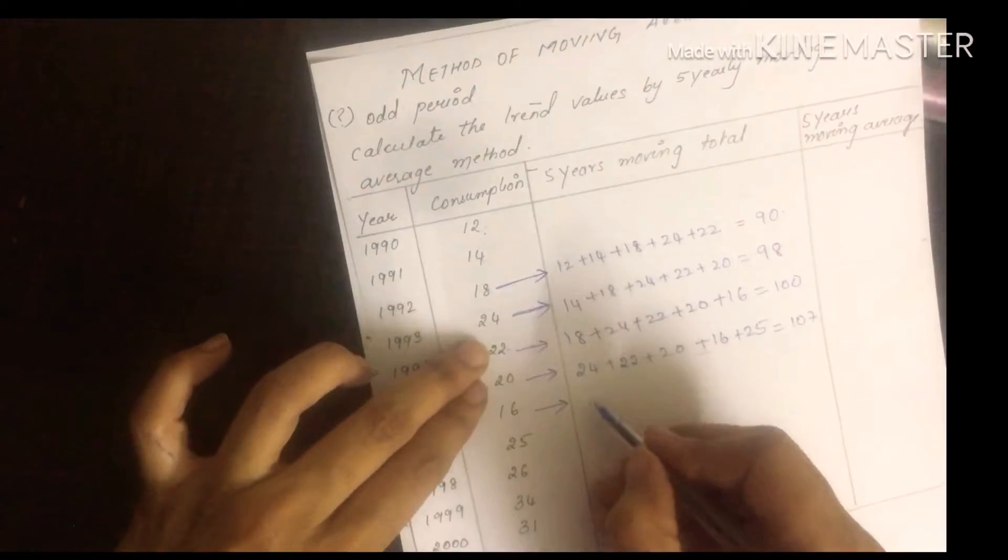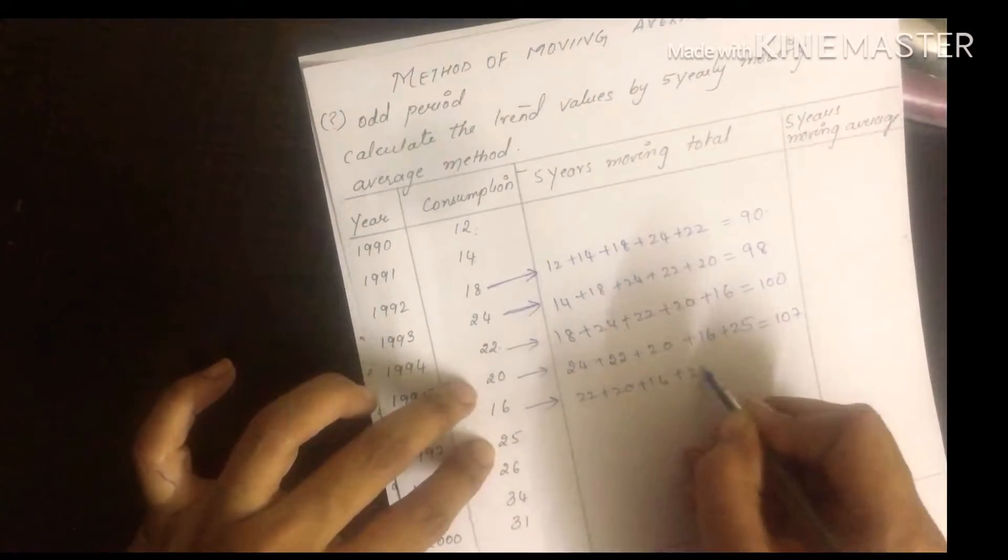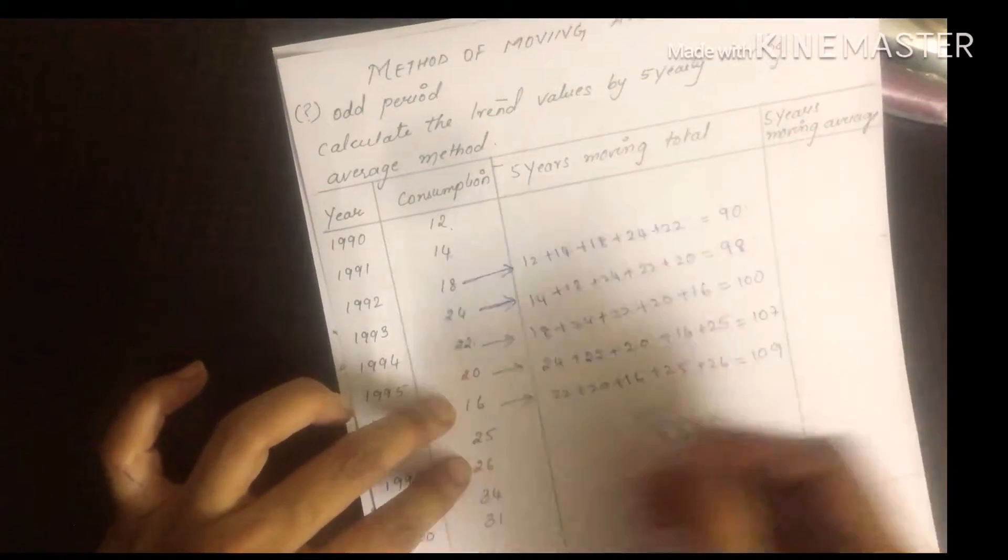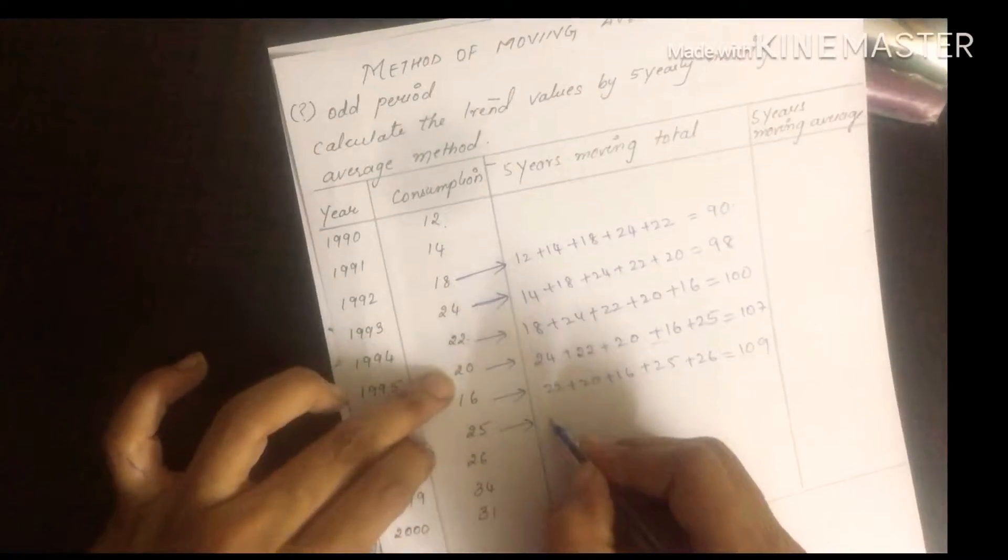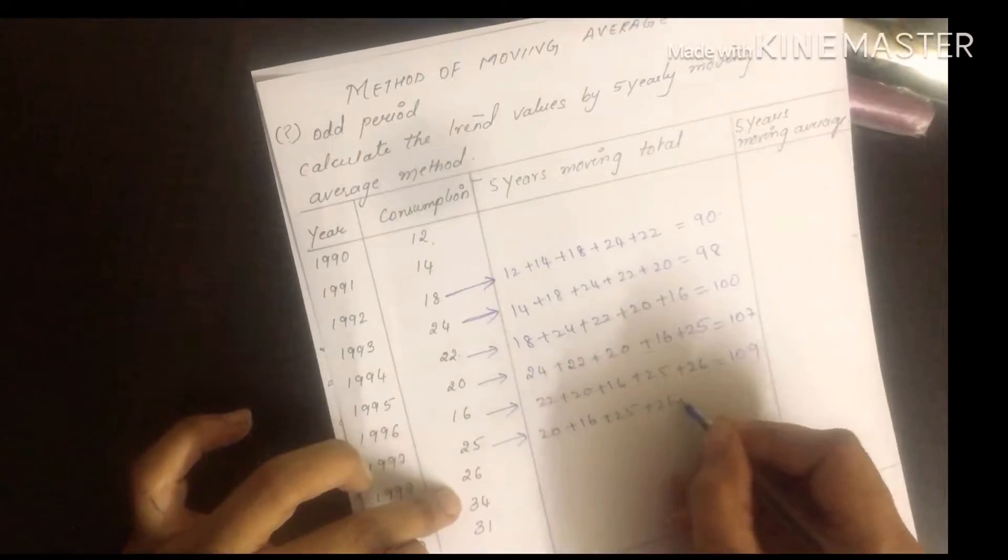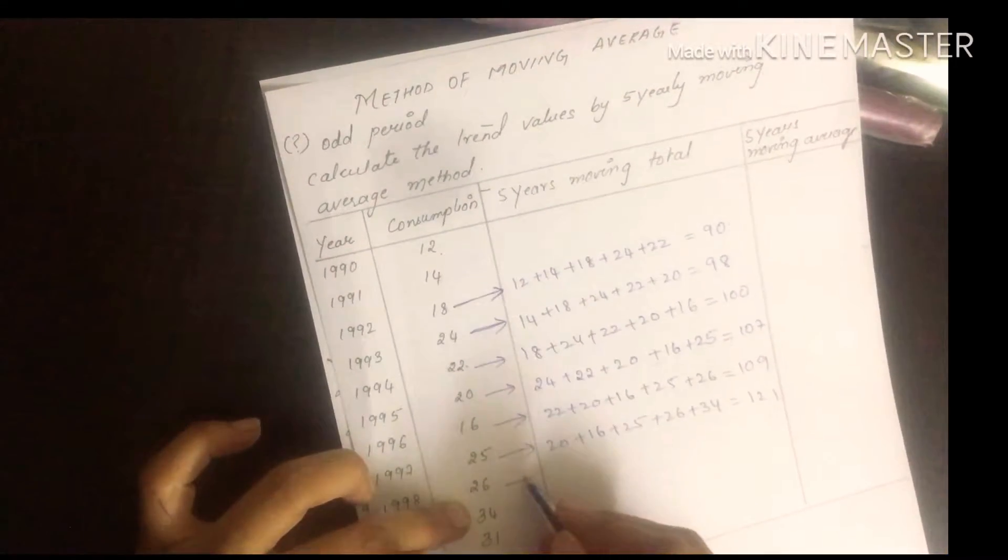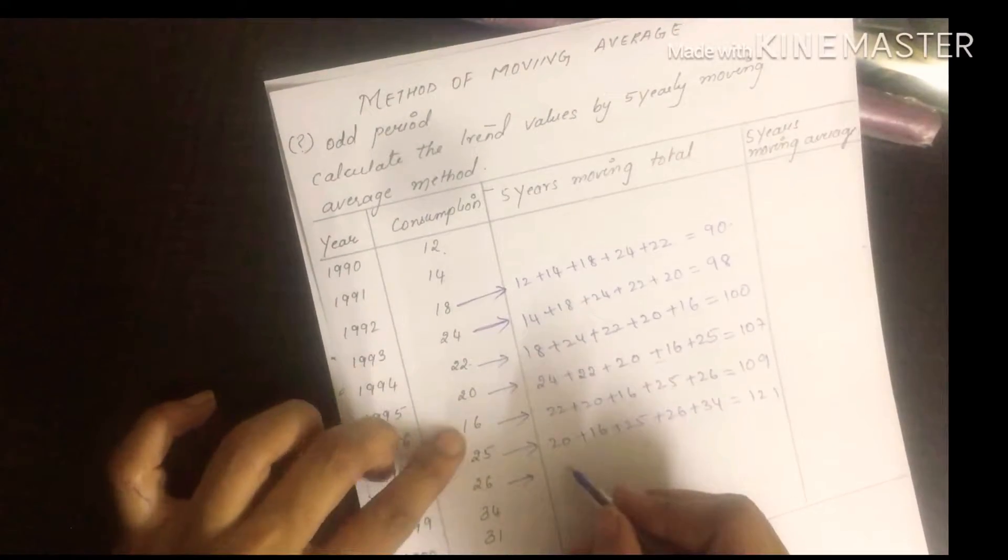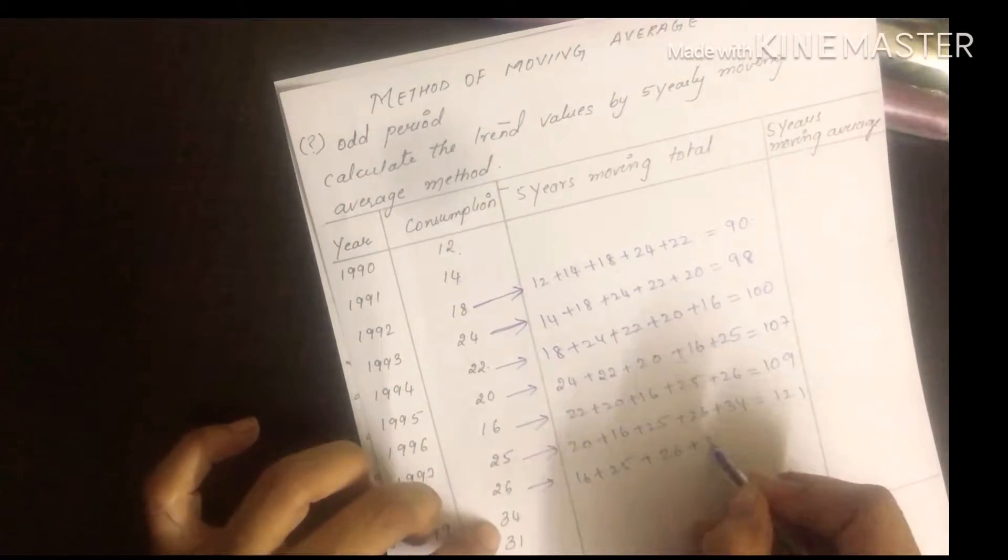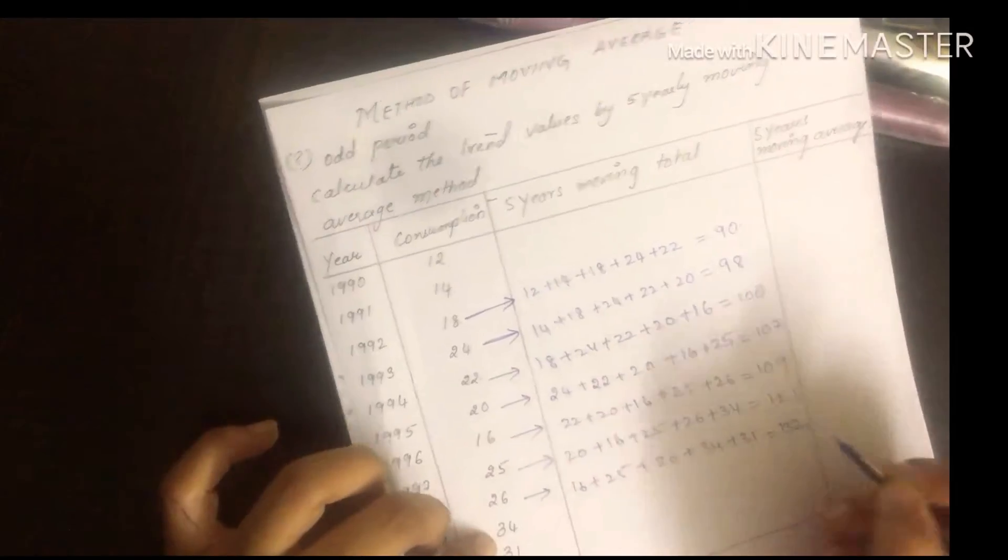107. 22 plus 20 plus 16 plus 25 plus 26 is 109. Then 16 plus 25 plus 26 plus 34 plus 31 equals 132.